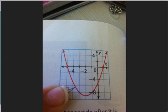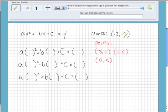It looks like we are going to go over negative 2 on the x-axis, and then we are going down 2, 4, 6, 8, 9, so negative 9 on the y-axis. So we are going to guess that our vertex is at negative 2, negative 9.